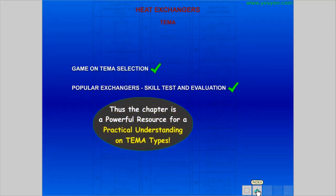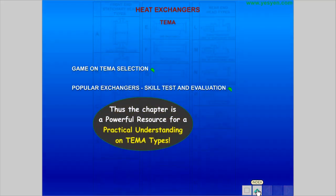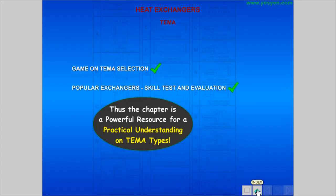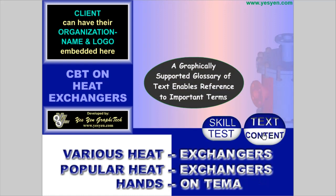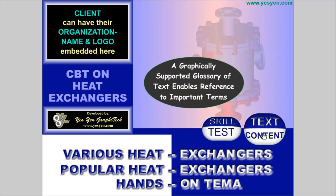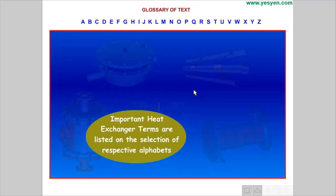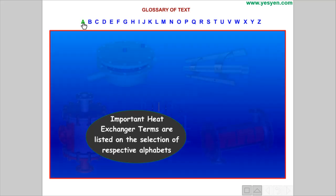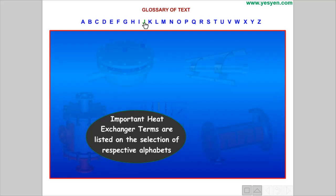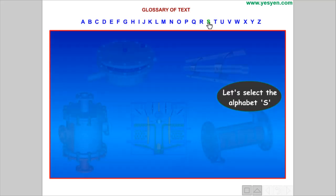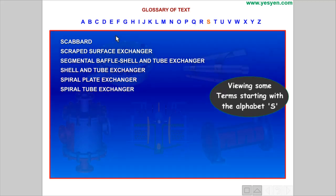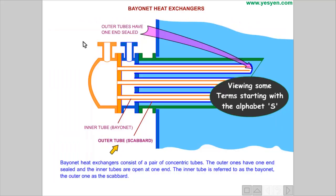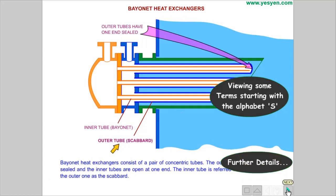The chapter is a powerful resource for a practical understanding of TEMA types. Back to main index. A graphically supported glossary of text enables reference to important terms. Important heat exchanger terms are listed on the selection of respective alphabets. Selecting the alphabet S shows various terms starting with S, with further details available.